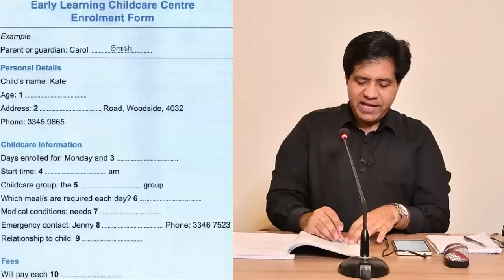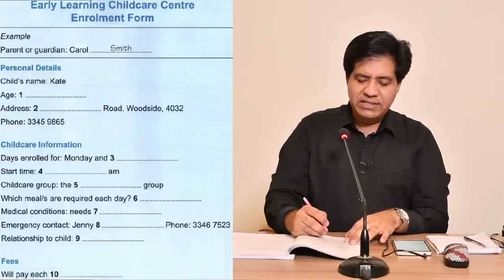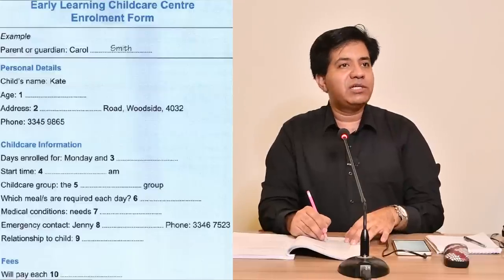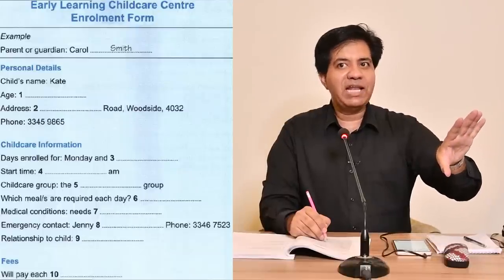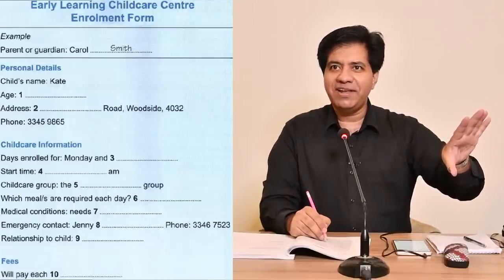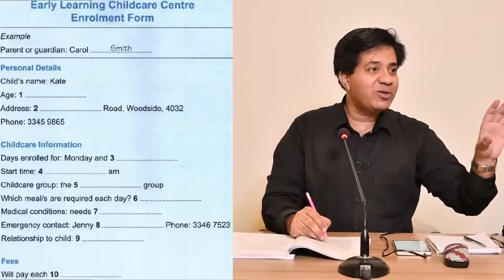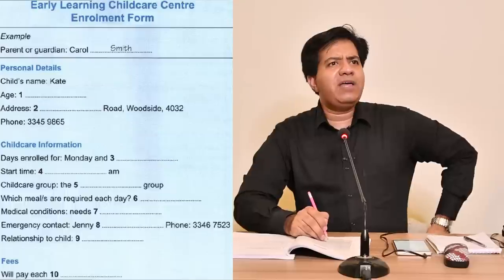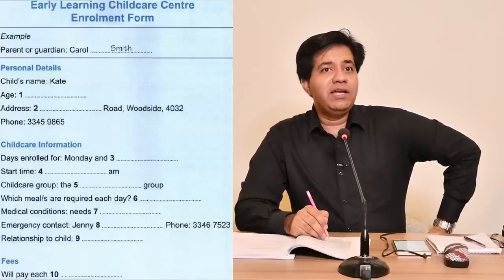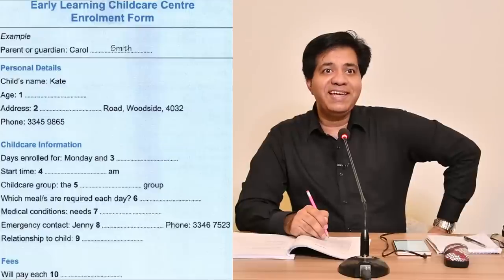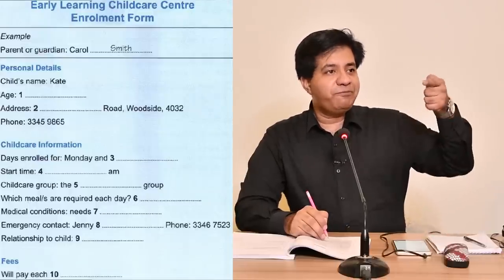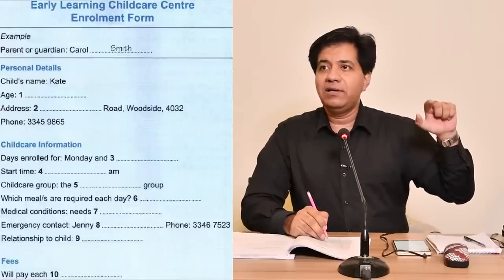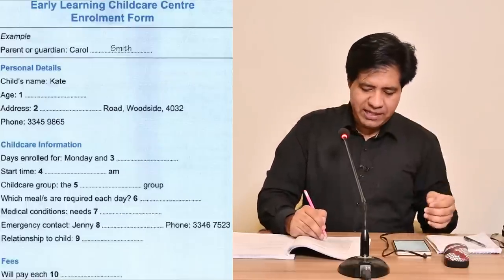The next topic is Child Care Information — days enrolled for: Monday and dash. The answer is going to be a day of the week. They will try to confuse you — for example, they might say 'we have Monday and Tuesday available,' and the parent says 'Tuesday I'm busy, what about Friday?' — 'Yes, we have that option, so Monday and Friday.' The final thing said is always the answer. Let me play the audio now.